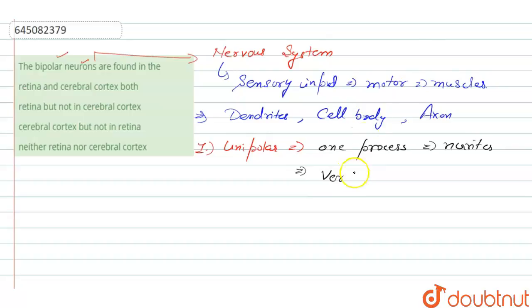So next kind here is the bipolar neurons. These are the neurons which contain two extensions or two processes. Out of these two, one is the axonal process and the second is the dendrite.